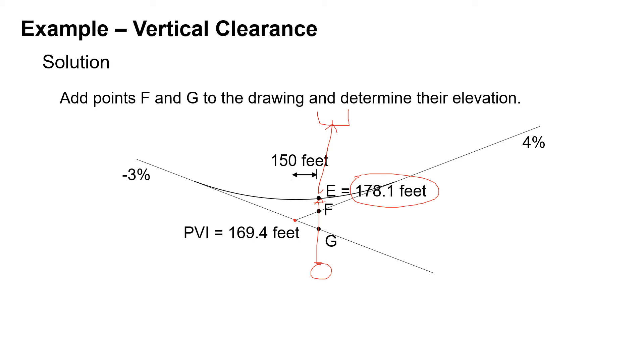We need to find the elevation at point F and at point G. The elevation at F is 169.4 feet plus 4% times 150 feet. We're just going up this grade here to reach point F, so the elevation at that point is 175.4 feet.